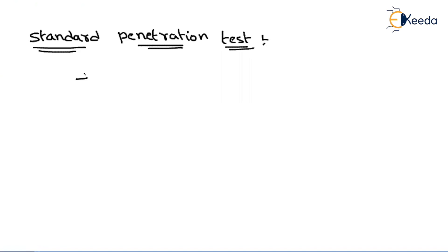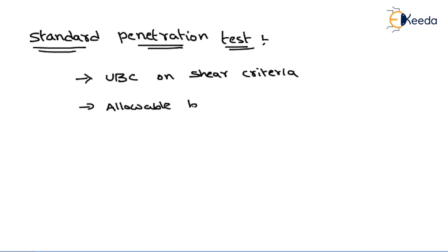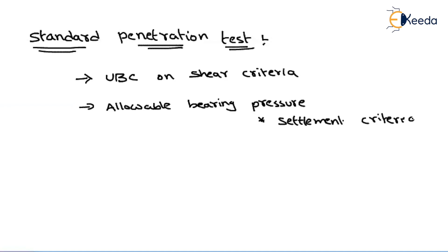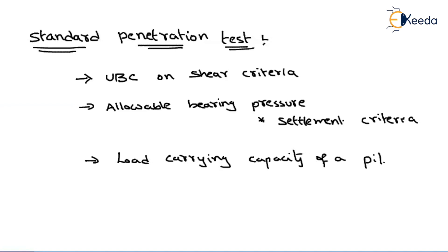Out of all those, let me write down the important points. Just like in the plate load test, here also we can find out ultimate bearing capacity based on shear criteria. We can also find out allowable bearing pressure, which is based on settlement criteria. And this test is also used to evaluate the load carrying capacity of a pile. These three are the very useful parameters we are going to find.